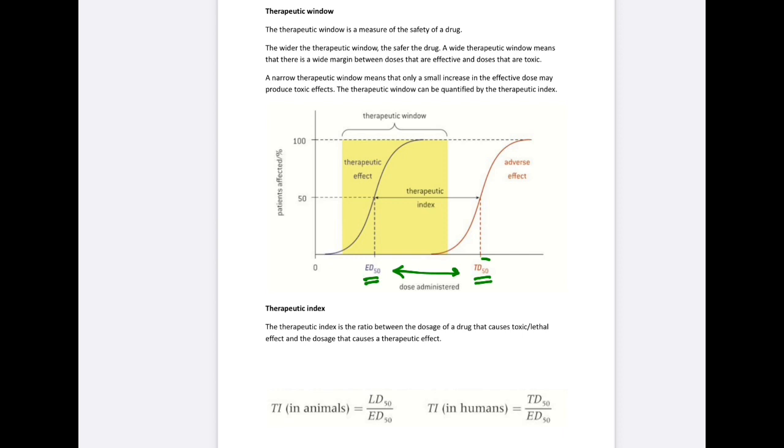When we do clinical trials of a drug, we have an animal testing phase. During that phase, we're going to administer different quantities of the drug to determine the dose required to have the desired medical effect. We're going to look at the minimum amount of drug that is required to affect 50% of the population of animals.